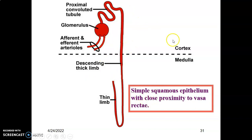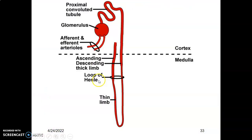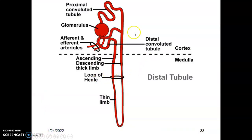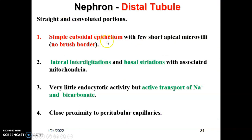For the loop of Henle, the thin limbs have simple squamous epithelium and close proximity to the vasa recta. The distal convoluted tubule is usually close to the vascular pole. The distal tubule also has straight and convoluted portions and is lined by simple cuboidal epithelium. However, they lack a brush border — they may have short microvilli, but they lack a true brush border. They also have lateral interdigitations, basal striations, and abundant mitochondria, which are features of an ion-transporting cell.